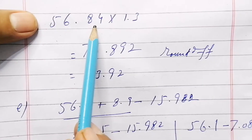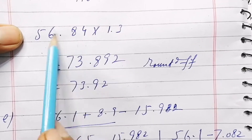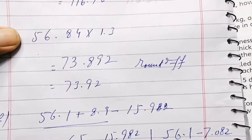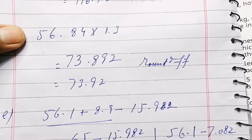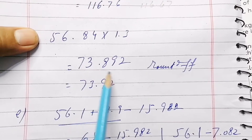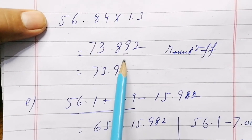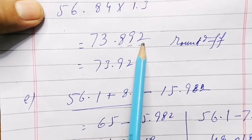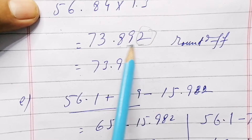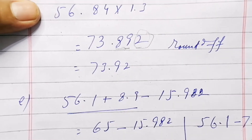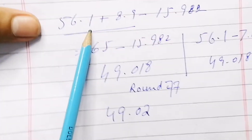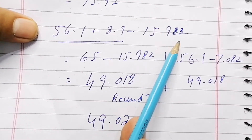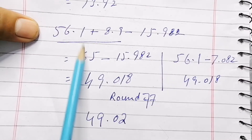For 56.84 multiplied by 1.3, multiplying gives 73.892. Rounding off: if you take the hundredth place, 9 rounds up. If you take the thousandth place, 2 is smaller than 5, so it remains the same — giving 73.89.